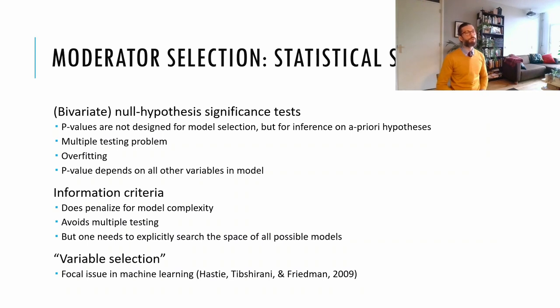Another potential solution would be to use information criteria. With information criteria, we can construct several candidate models, which include different sets of moderator variables, and then use an information criteria to select the best model from the set. Information criteria have the advantage that they are designed to perform model selection, but the problem is that we have to manually specify all candidate models, and there's no guarantee that the best possible model is even in the set. And the third solution, what we are using, is variable selection.